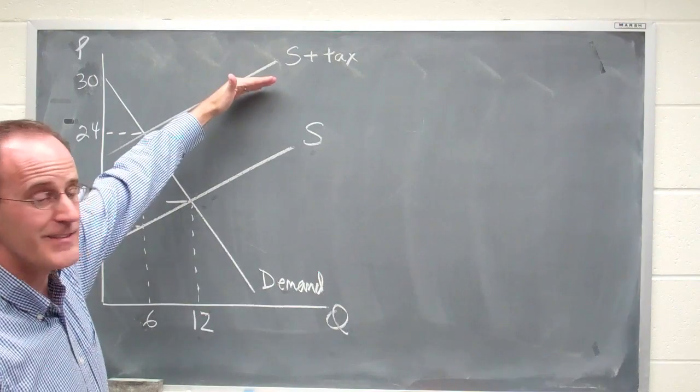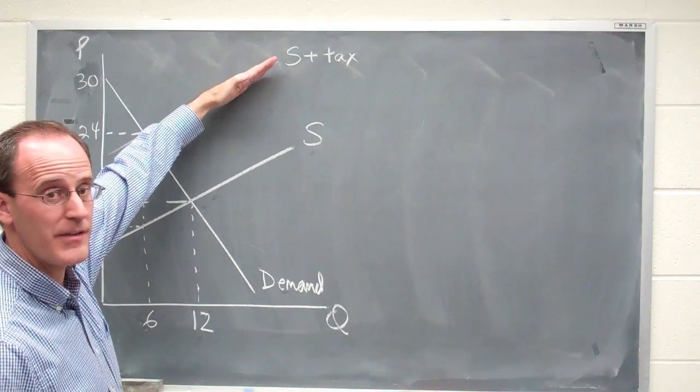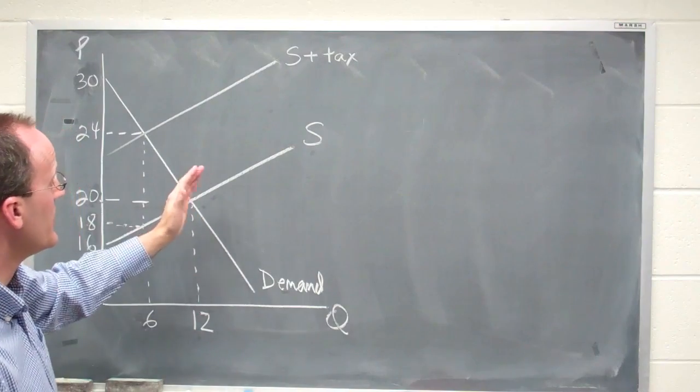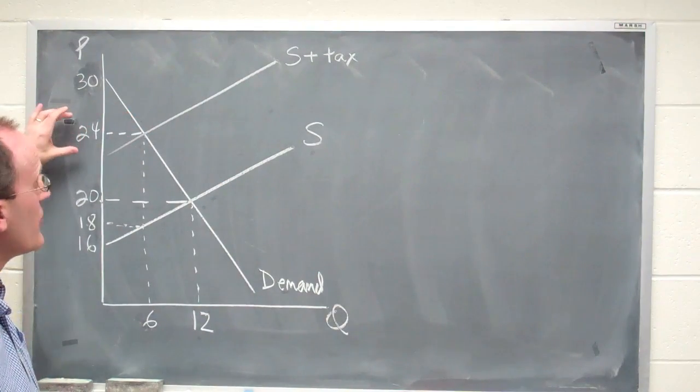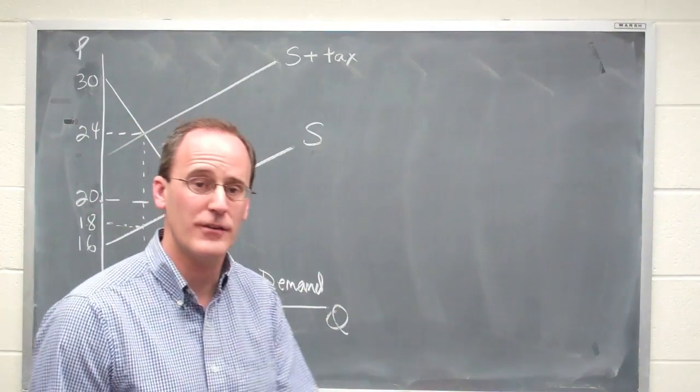When a tax is levied on the supplier, the supply curve shifts up by the amount of the tax, and what that does is cause the price in this case to rise to $24 and the number of units sold to drop to six.